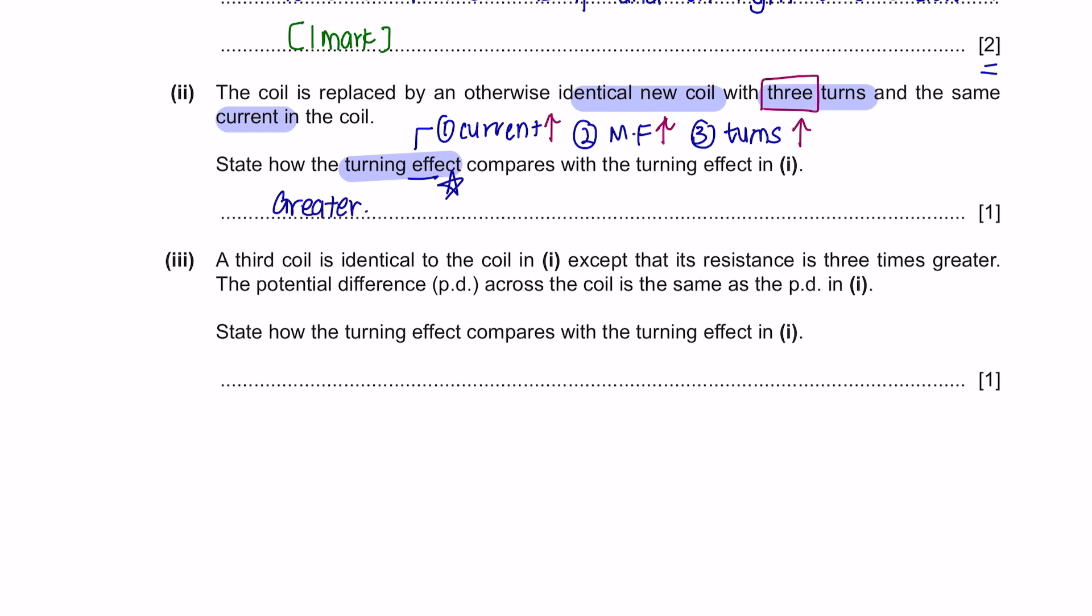Part 3. A third coil is identical to the coil in part 1, except that its resistance is 3 times greater. The potential difference across the coil is the same as the potential difference in part 1. State how the turning effect compares with the turning effect in part 1. The modification here is that the resistance increased by 3 times. According to Ohm's law, current is inversely proportional to its resistance. If the resistance increases, the current flow will decrease.